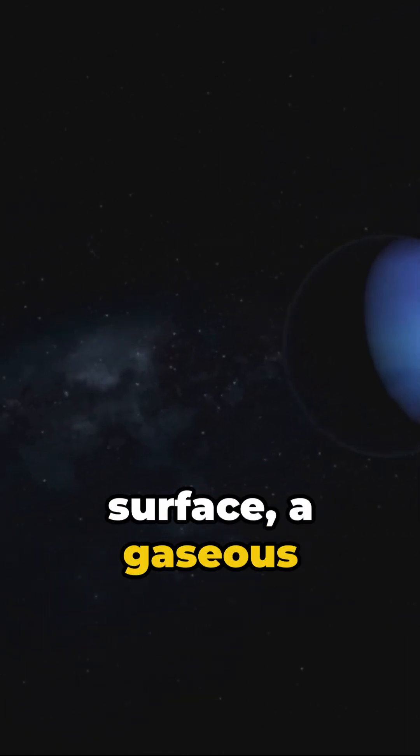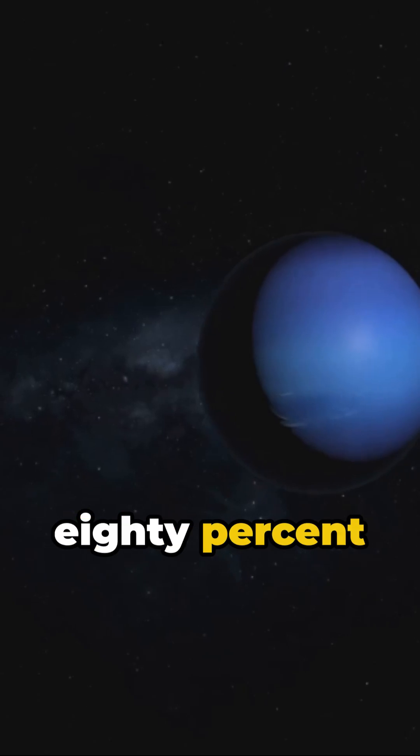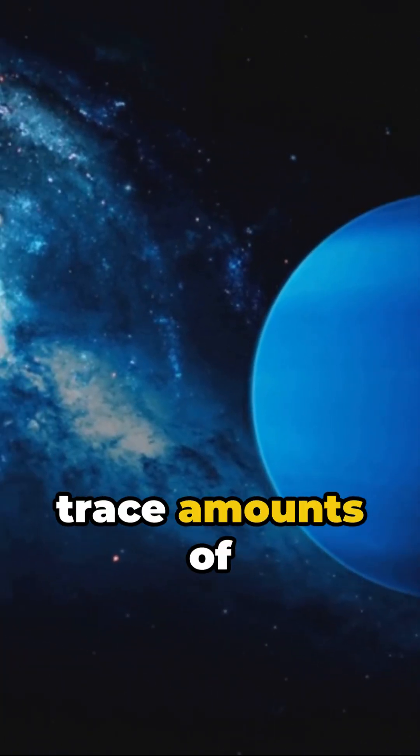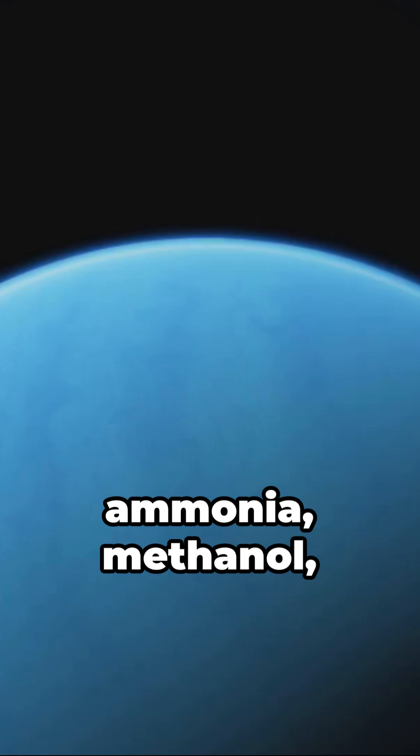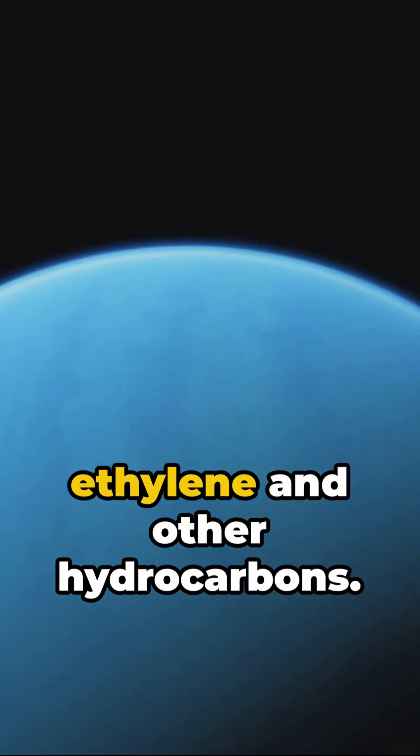Neptune's upper surface, a gaseous expanse, is about 80% hydrogen, 19% helium, with trace amounts of methane, water vapor, ammonia, methanol, ethylene, and other hydrocarbons.